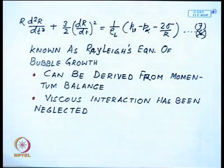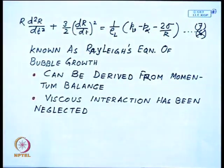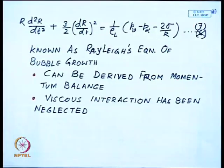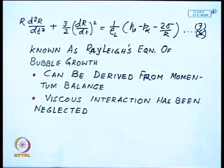Two points are to be noted from the Rayleigh equation. First, the equation was derived by equating work done by bubble expansion with the kinetic energy increase of the fluid — an alternative approach would be to start from the Navier-Stokes equation with proper simplification, giving the same result. Second, viscous interaction has been neglected here, assuming velocities are small and liquid viscosity does not play a major role. However, analyses after Rayleigh did include the effect of viscosity to see what the result would be.